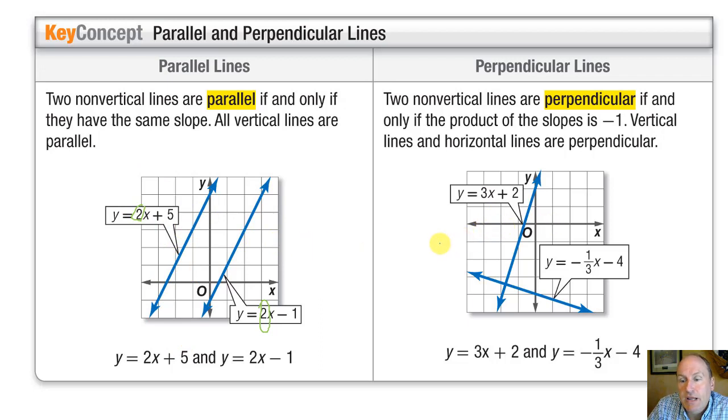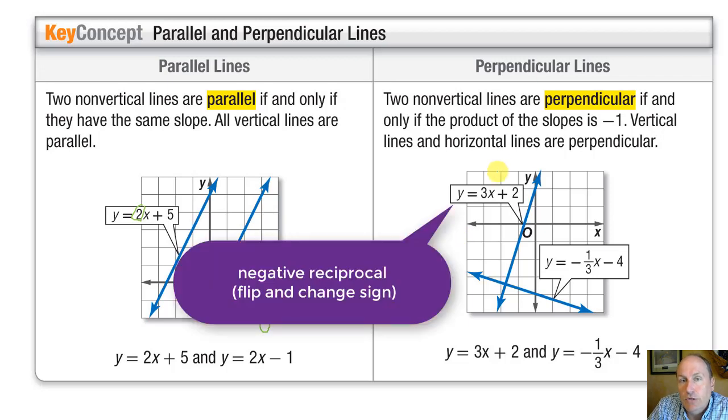Now, perpendicular lines have another kind of pattern. Two lines are perpendicular if their slopes are negative reciprocals of each other. Look at that as: is their product of those two slopes negative 1? But I like to use the term negative reciprocals.